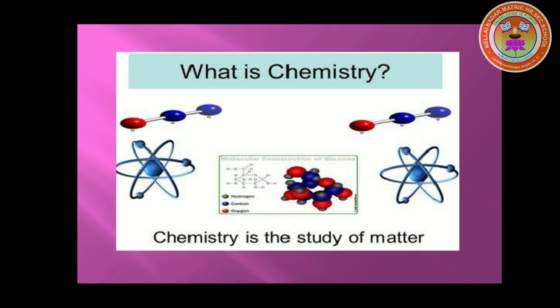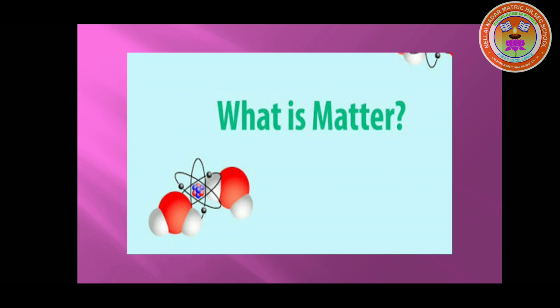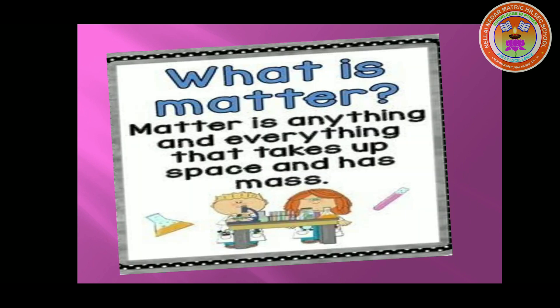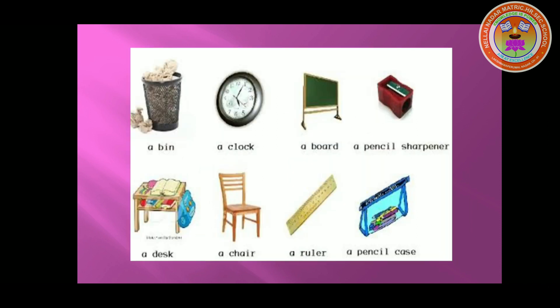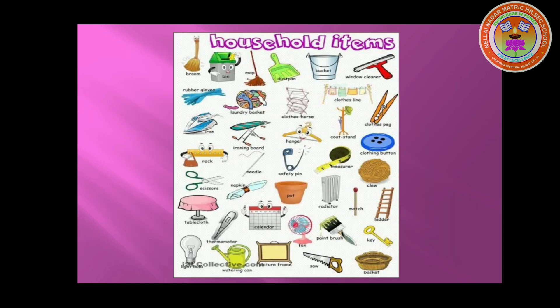Chemistry is the study of matter. So next you have to know what is matter. Anything that has mass and occupies space, that is volume, is called matter. So everything we see around us is called matter. For example, pen, pencil, paper, books, clock, board, desk, chair, every household item — these are some examples of matter, because these things have a particular mass and occupy space, that is volume. So these things are called matter.